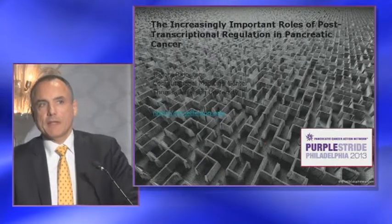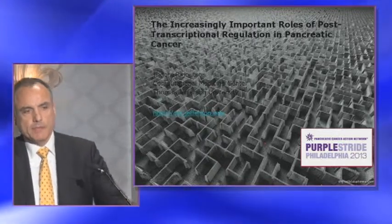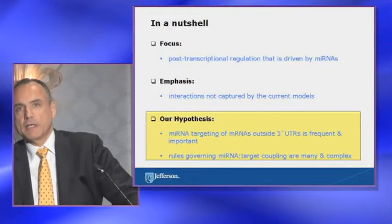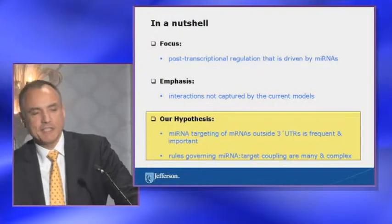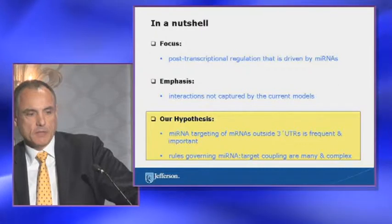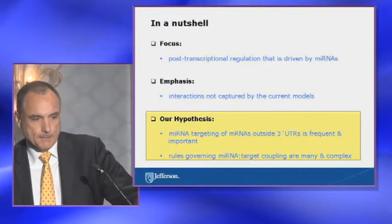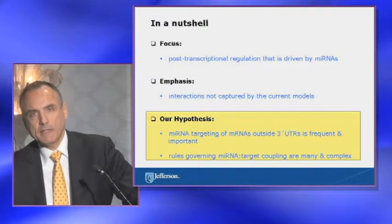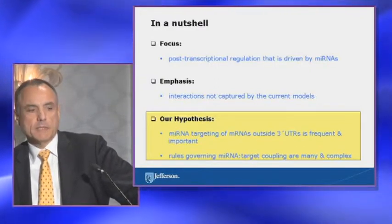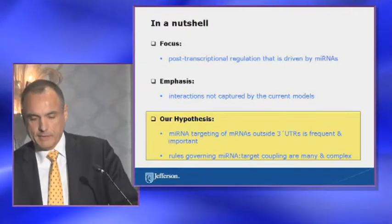You've heard of mutations that occur in the amino acid coding regions of genes. Some of them are deleterious, others are not, yet they've been linked to pancreatic cancer. The focus of the work we have been doing is basically post-transcriptional regulation driven by microRNAs. This is work I've been doing for almost 12 years, but I'm a newcomer in the pancreatic cancer context, working for a little over two years. The emphasis is on interactions not captured by current models. The hypothesis is that microRNA targeting of messenger RNAs outside the 3'UTRs is frequent and important, and the rules governing heteroduplex formation between microRNAs and targets are many, complex, and not well understood.